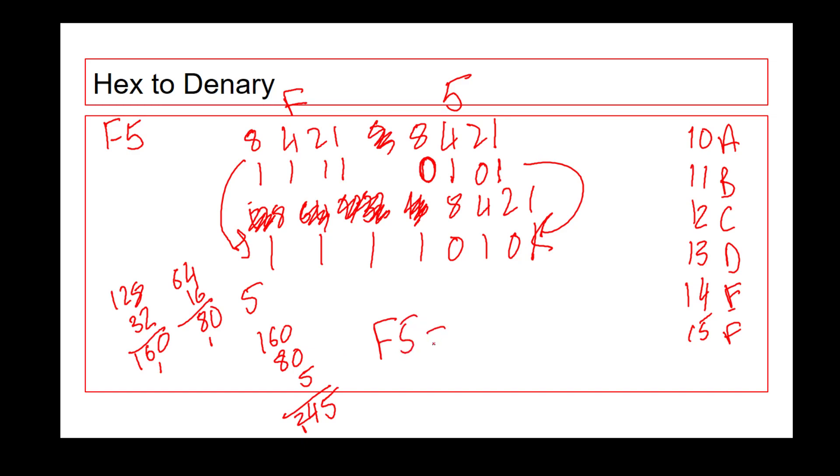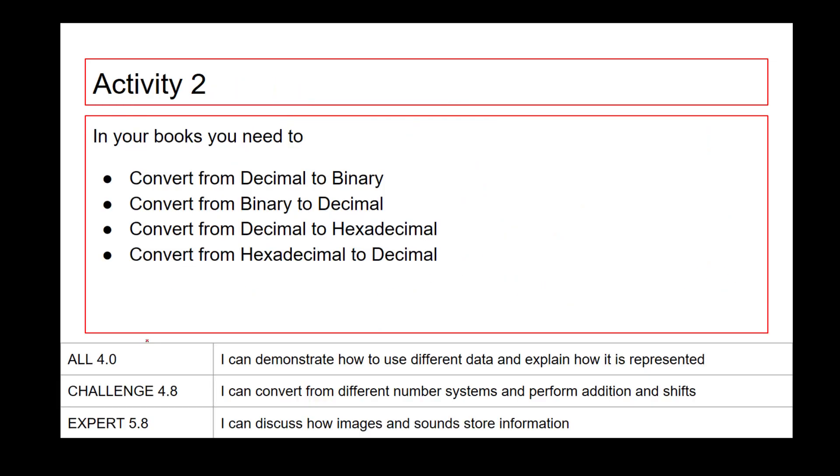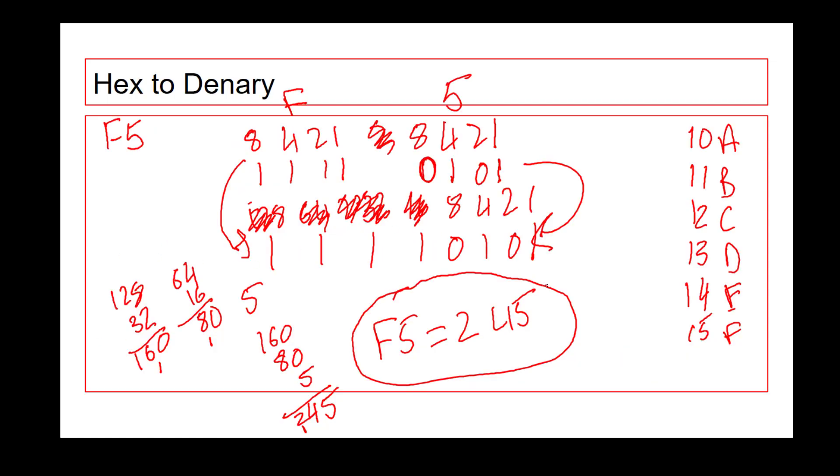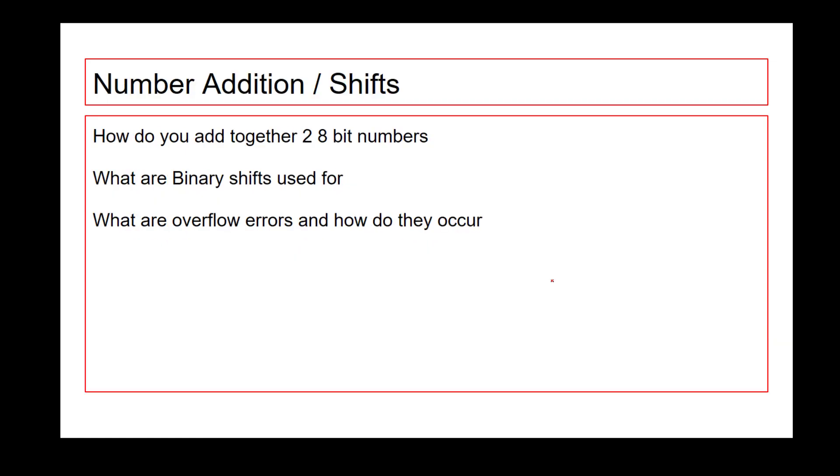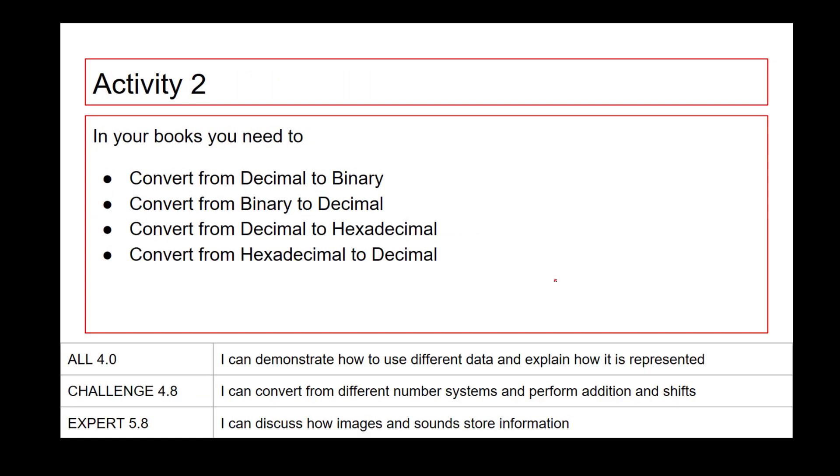So we can say that F5 equals 245. And remember to draw attention to this as well, just so the examiner can see what's going on and remember to show your full workings out. So what I want you to do in your books now is convert from decimal to binary and binary to decimal, and then convert from decimal to hexadecimal, hexadecimal to decimal as well. So give it a quick pause. And then we're going to look at number addition and shifts.